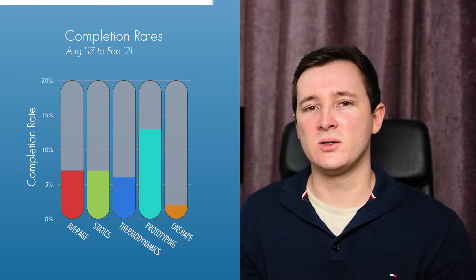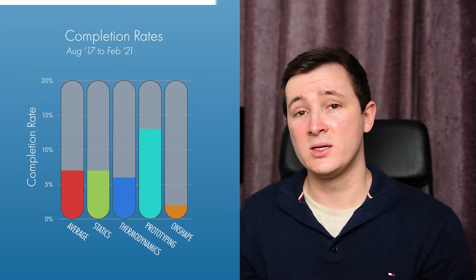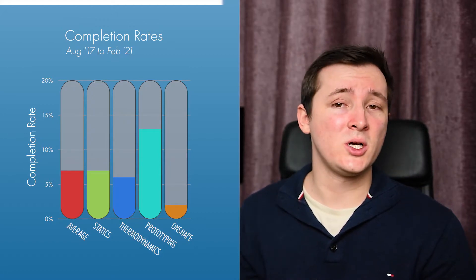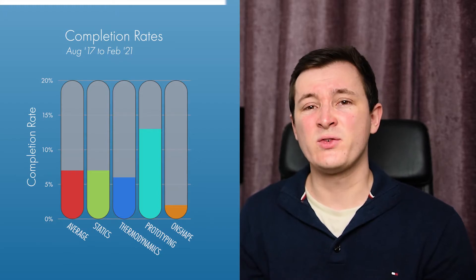What you've got to take into consideration is that these courses from left to right are based on order of number of enrollments I have in the course. The prototyping and Onshape courses haven't got enough students to give a reasonable average perhaps.